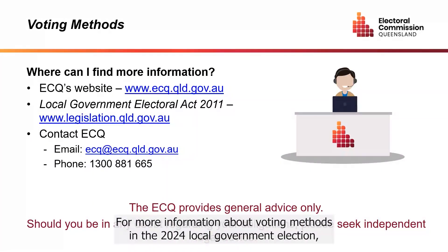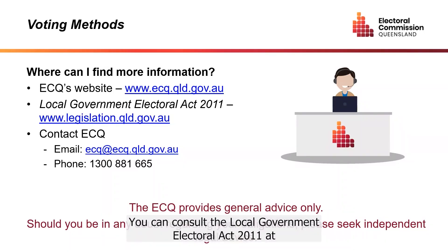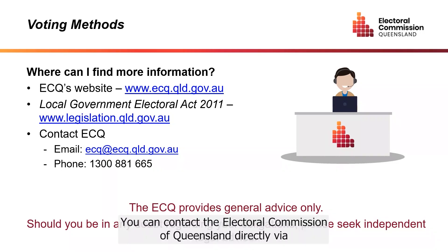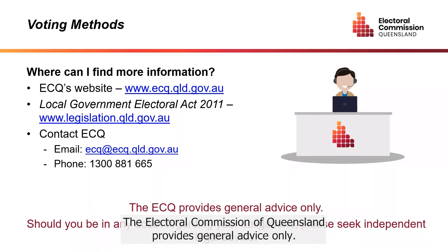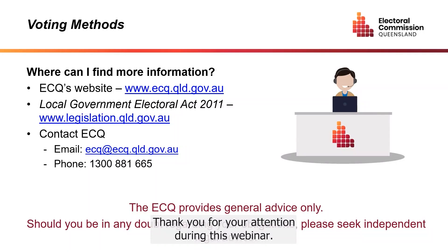For more information about voting methods in the 2024 local government election, you can visit the Electoral Commission of Queensland's website at www.ecq.qld.gov.au, consult the Local Government Electoral Act 2011 at www.legislation.qld.gov.au, or contact the Electoral Commission of Queensland directly via email at ecq.qld.gov.au or by telephone at 1300 881 665. The Electoral Commission of Queensland provides general advice only. Should you be in any doubt regarding your obligations, please seek independent legal advice. Thank you for your attention during this webinar.